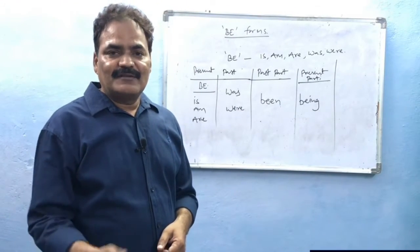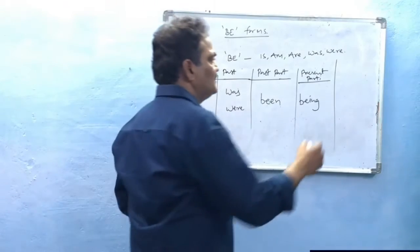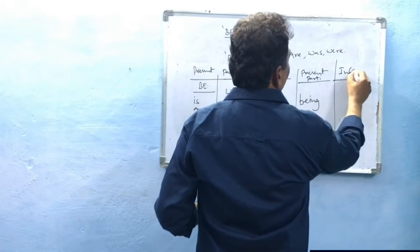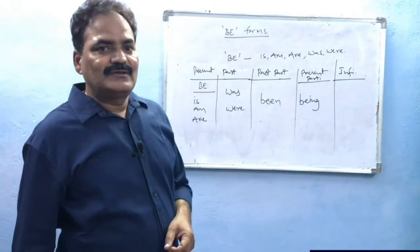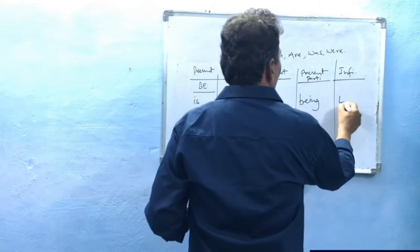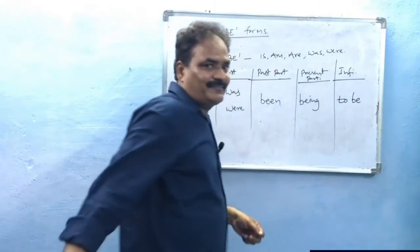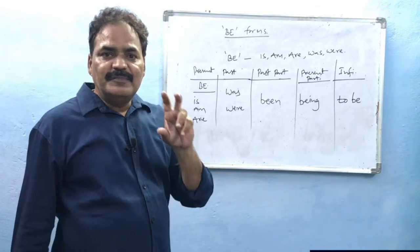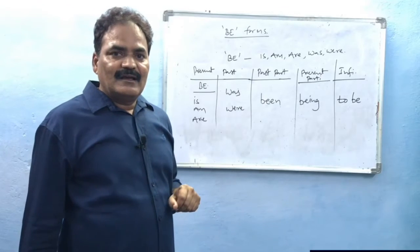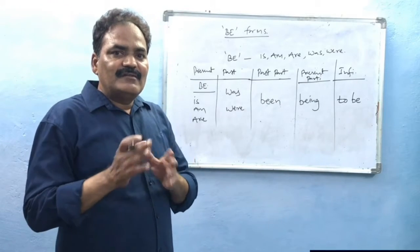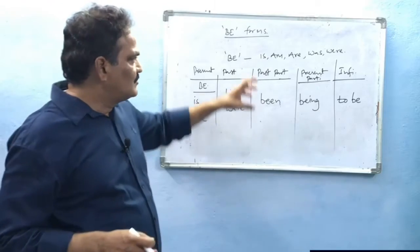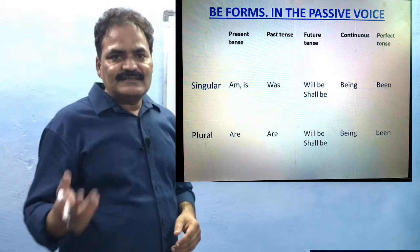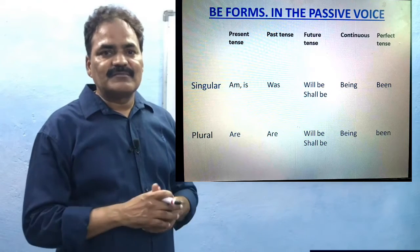Present participle in the conjugation for 'be' is 'being.' Another form is the infinitive: 'to be' — this is rarely used. These are the conjugations of the be-verb. As per the main verb and its form, we have to take these be-forms in passive voice. Let us understand with a few more examples.